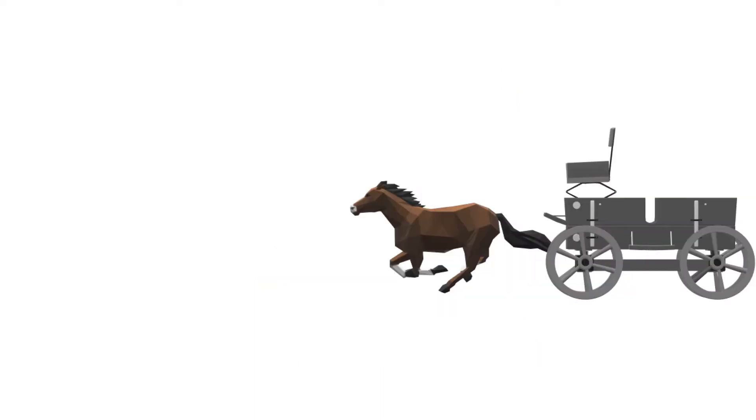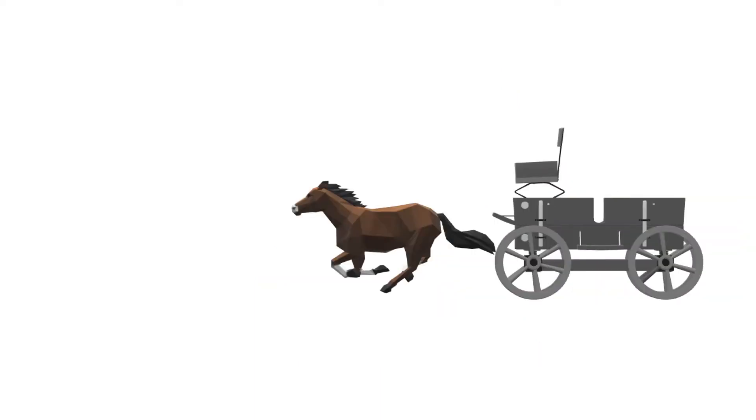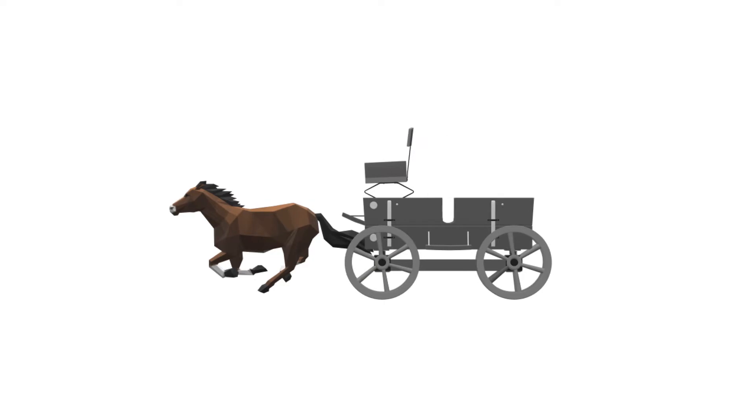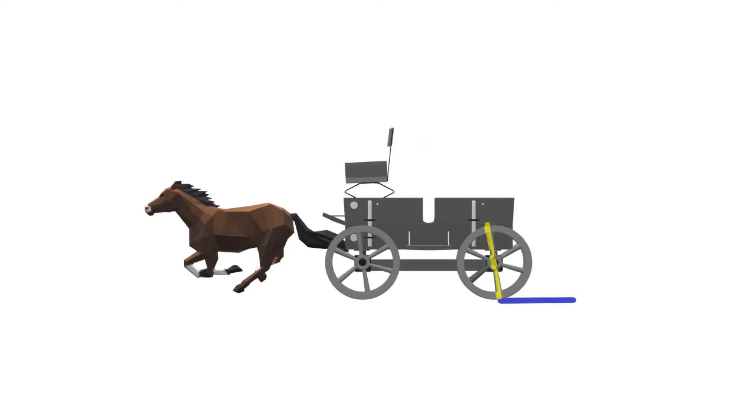A careful observer might notice this relationship when the horse pulls this cart forward. When the wheel makes a full revolution, the cart has advanced about three times longer than the measure of the double spoke length.